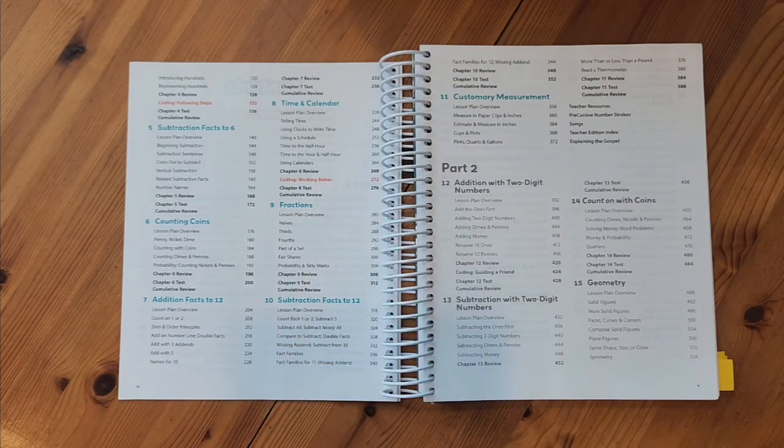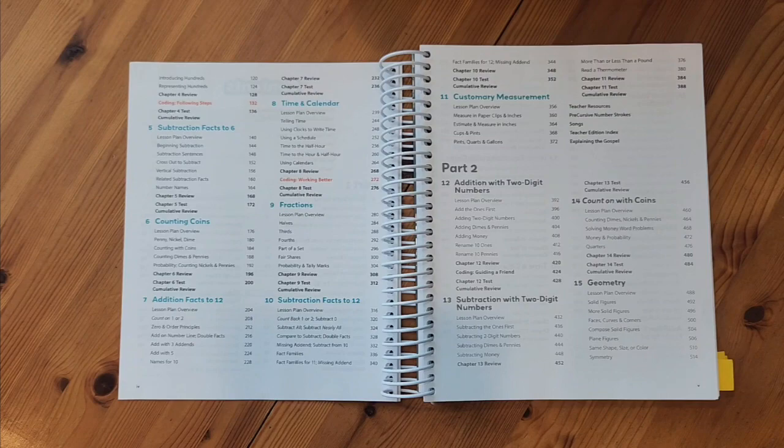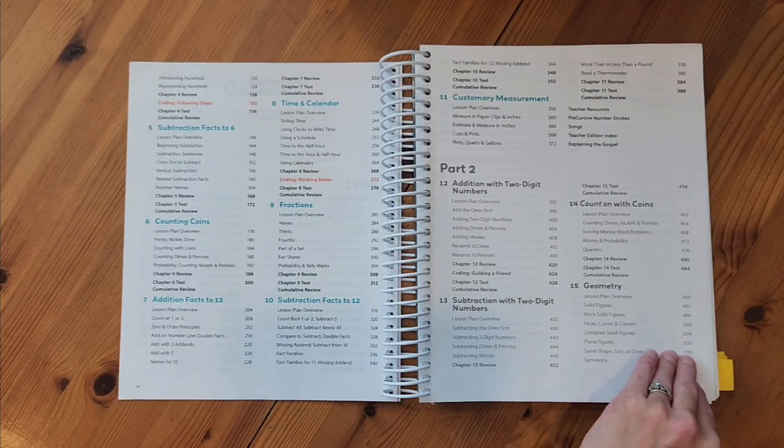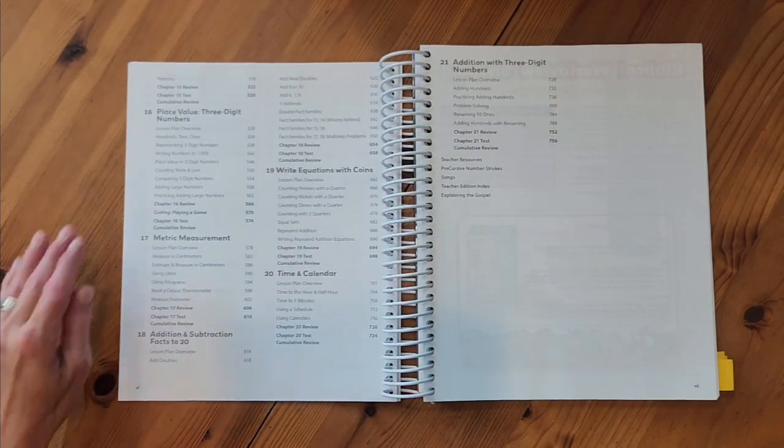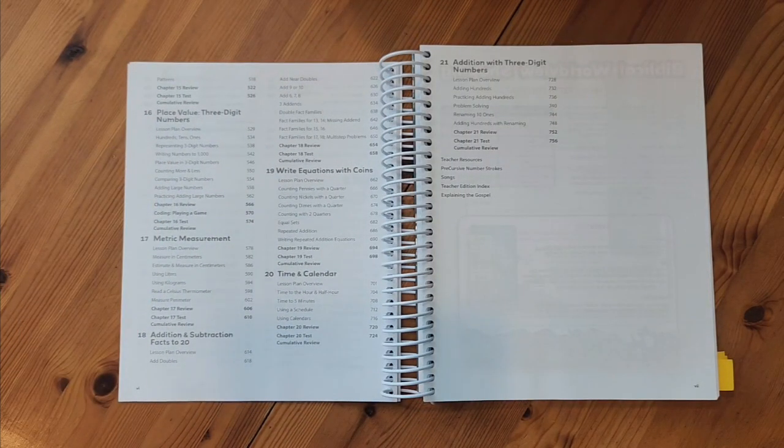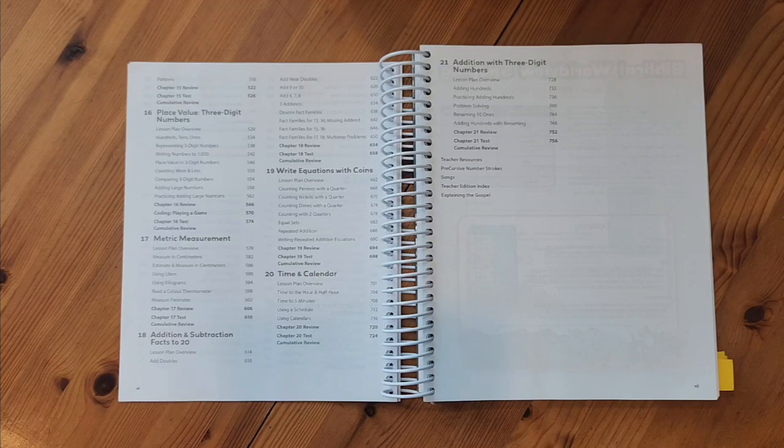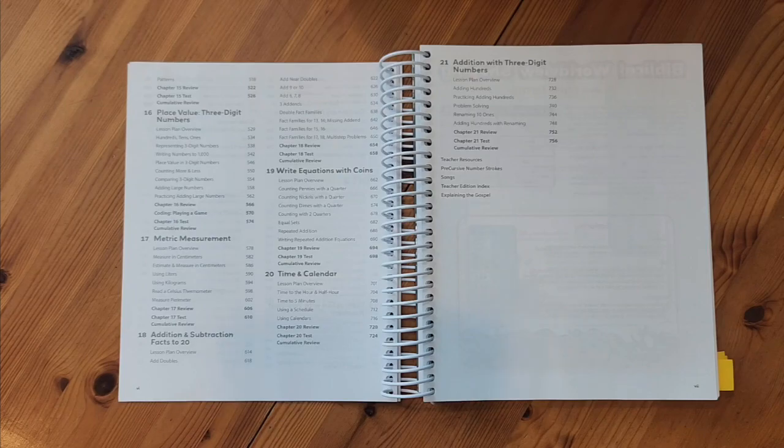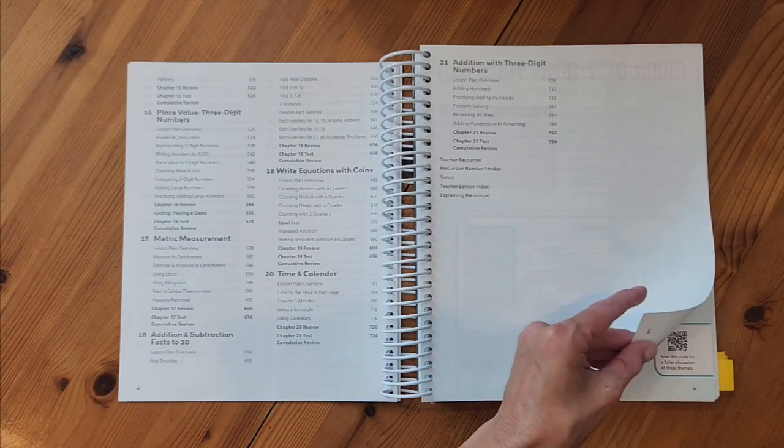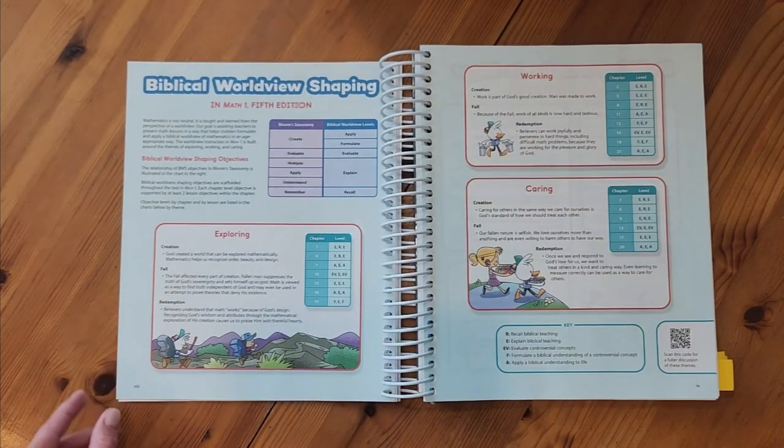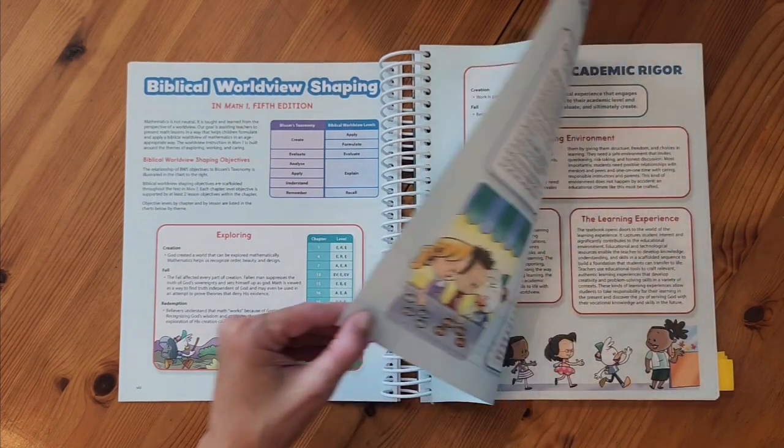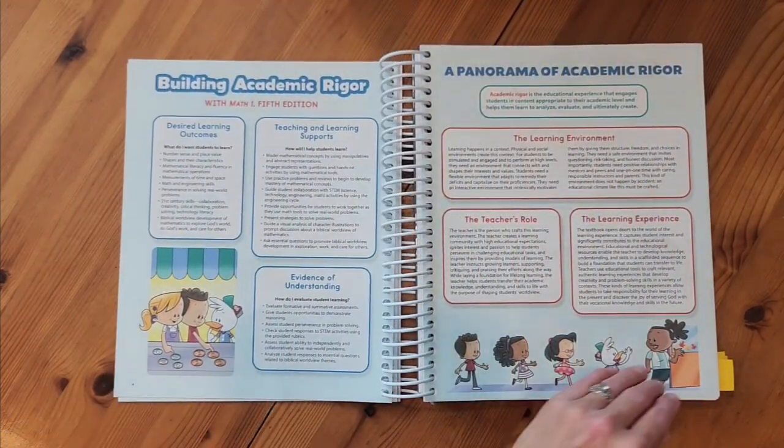Then part 2 will have chapters on addition with two-digit numbers, subtraction with two-digit numbers, count on with coins, geometry, place value three-digit numbers, metric measurement, addition and subtraction facts to 20, write equations with coins, time and calendar, and addition with three-digit numbers. Any time I'm going to teach a new course, I like to start by reading through the material at the beginning of the book. This will introduce the course and give me suggestions for how to teach this course.